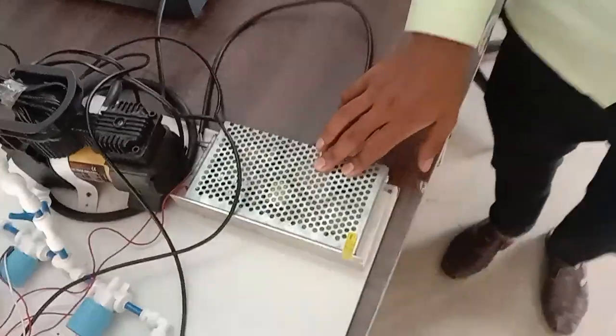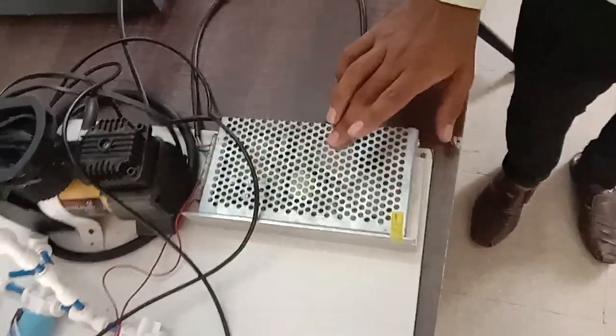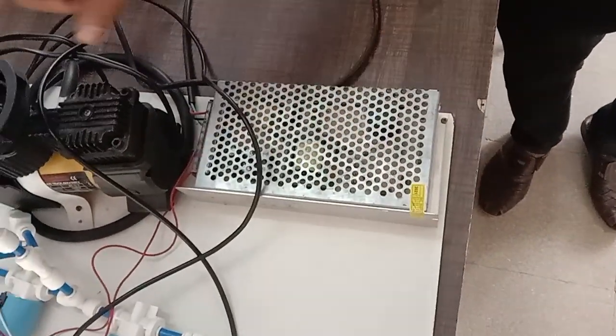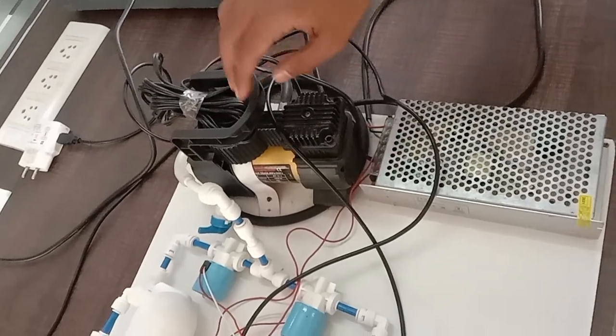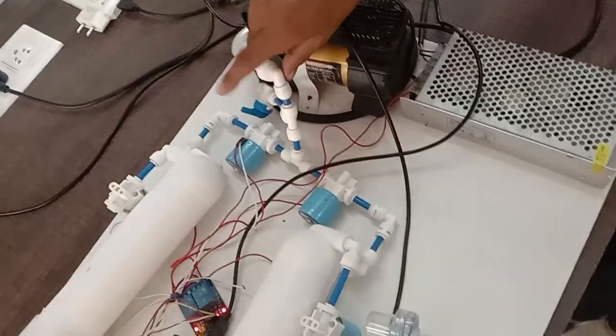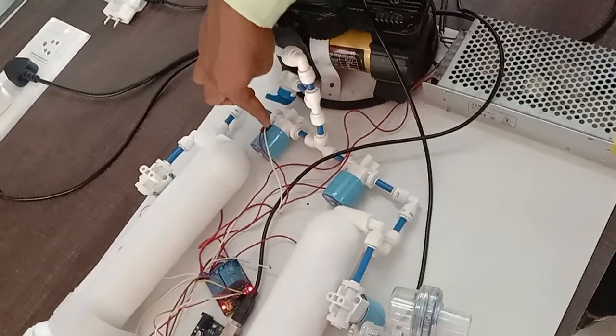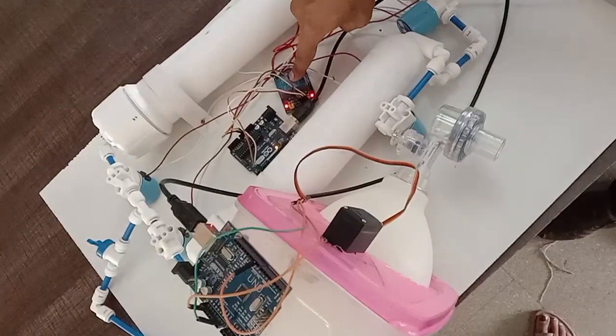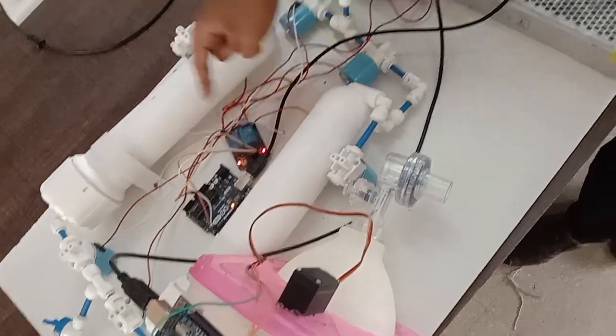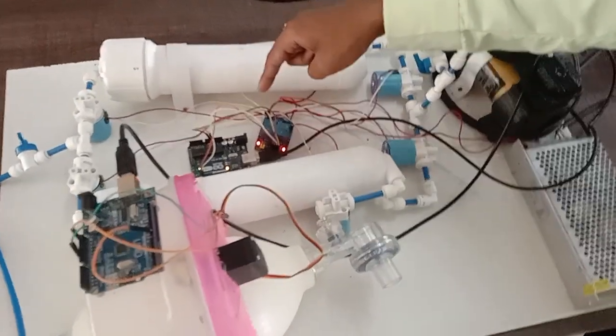So let me explain the individual components. Initially, this is the SMPS power supply and this is the compressor which we are using to produce compressed air. This air will be given through this pipe and these are all the solenoid valves which are controlled by this relay. And this relay switching is controlled by the Arduino UNO.